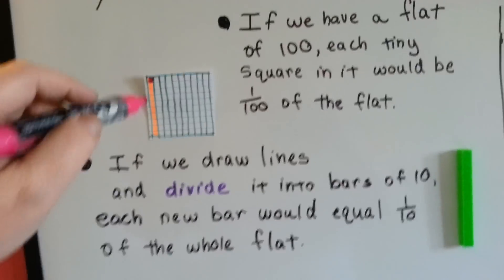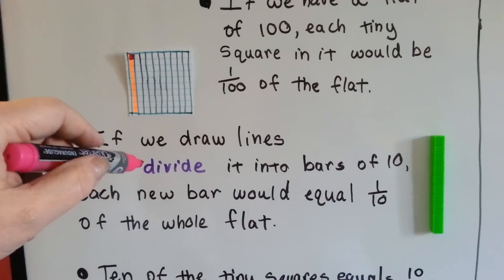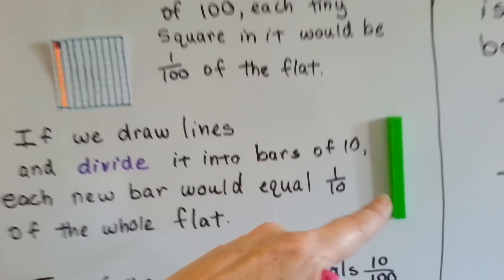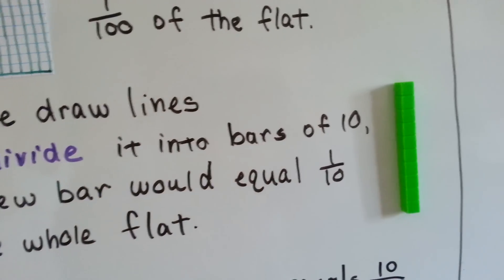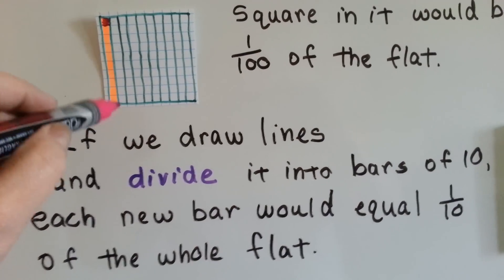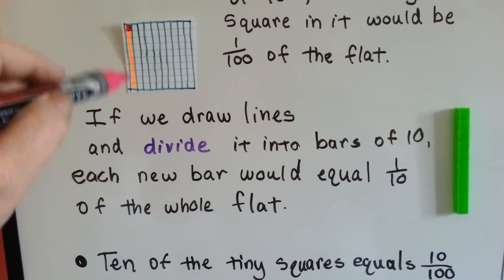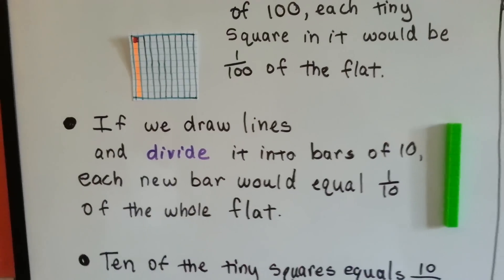If we draw lines coming down and divide it into bars of ten, like a bar of ten coming straight down like that, each new bar would be equal to one tenth of the whole flat.